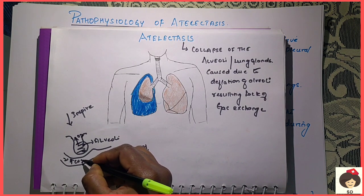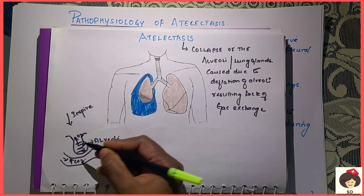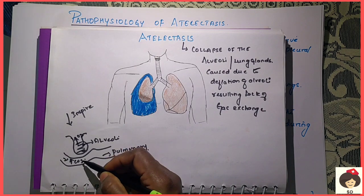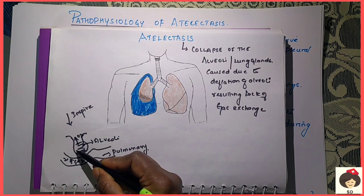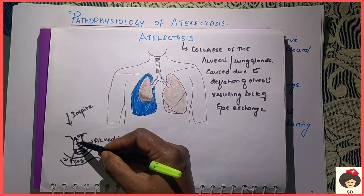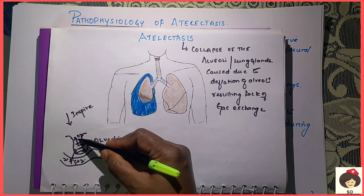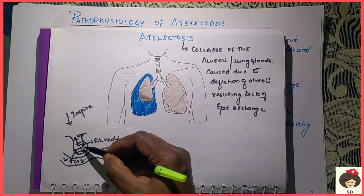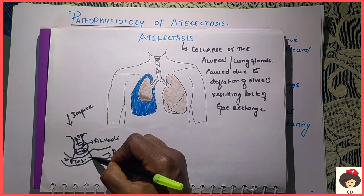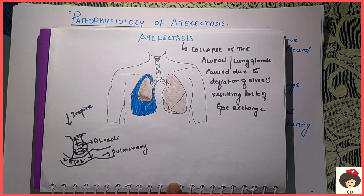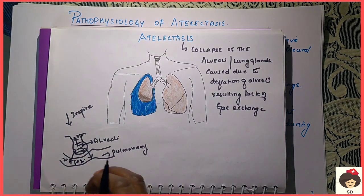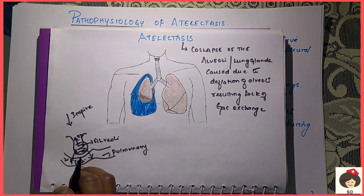Diffusion means molecules or gases will move from a higher concentration area to a lower concentration area. So carbon dioxide, which is high in the pulmonary capillaries, will enter the alveoli, and the oxygen, which is more in the alveoli, will enter the pulmonary capillaries and thereby go to the pulmonary vein and come to the left side of the heart. This is the main function of the alveoli.